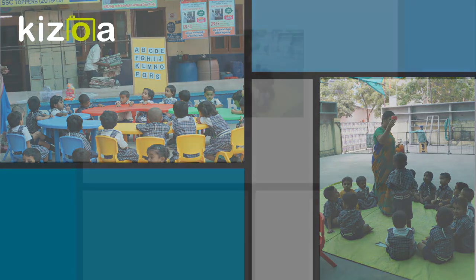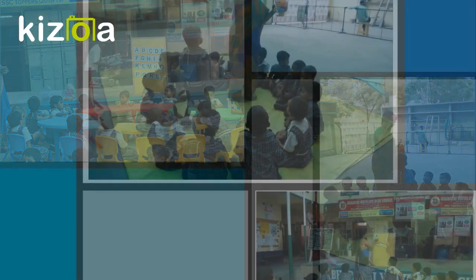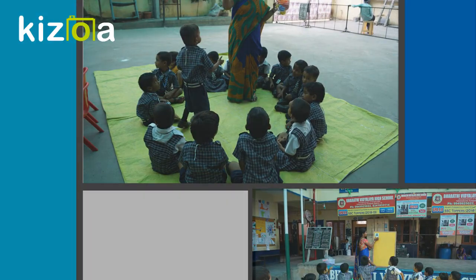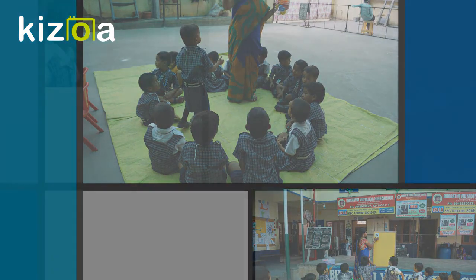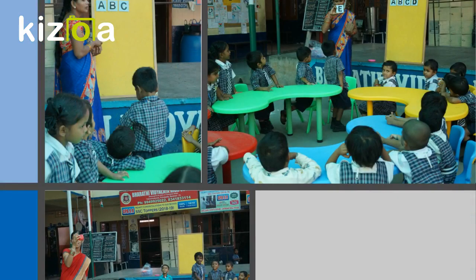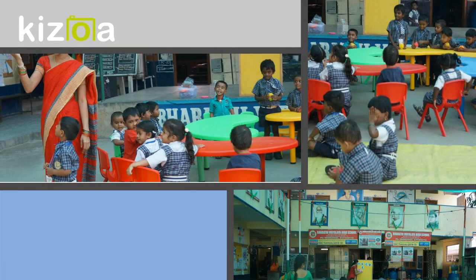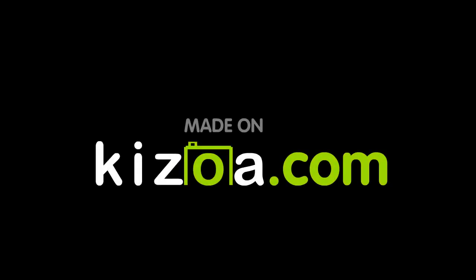U is for umbrella, u-u-umbrella. V is for van, v-v-van. W is for watch, w-w-watch. X is for x-ray, x-x-x-ray.